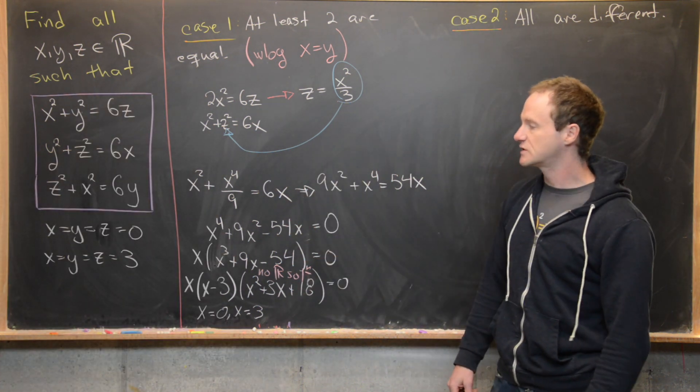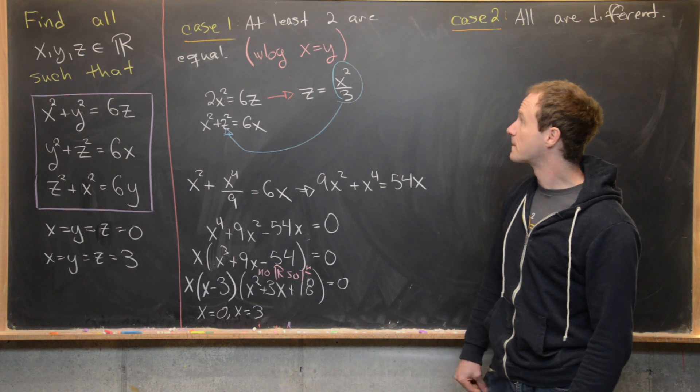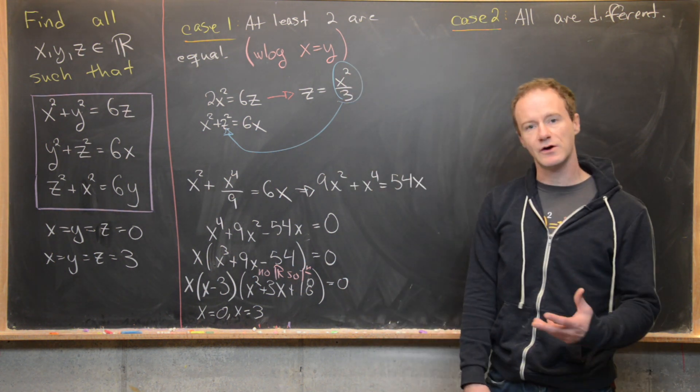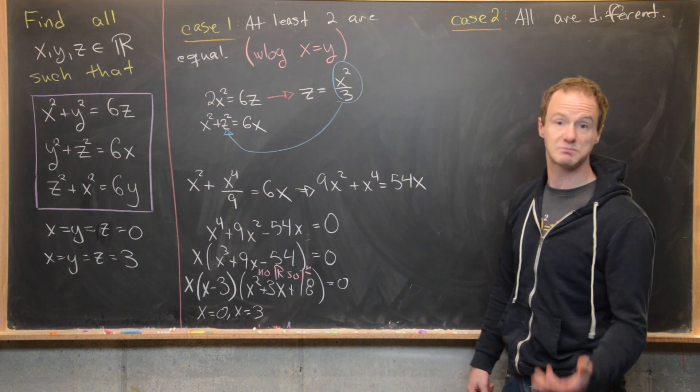So again, we've got two solutions: they are either all zero or all three. And that was from the case when two were equal. But notice if two were equal, that actually meant that all three were equal. So that's kind of interesting.